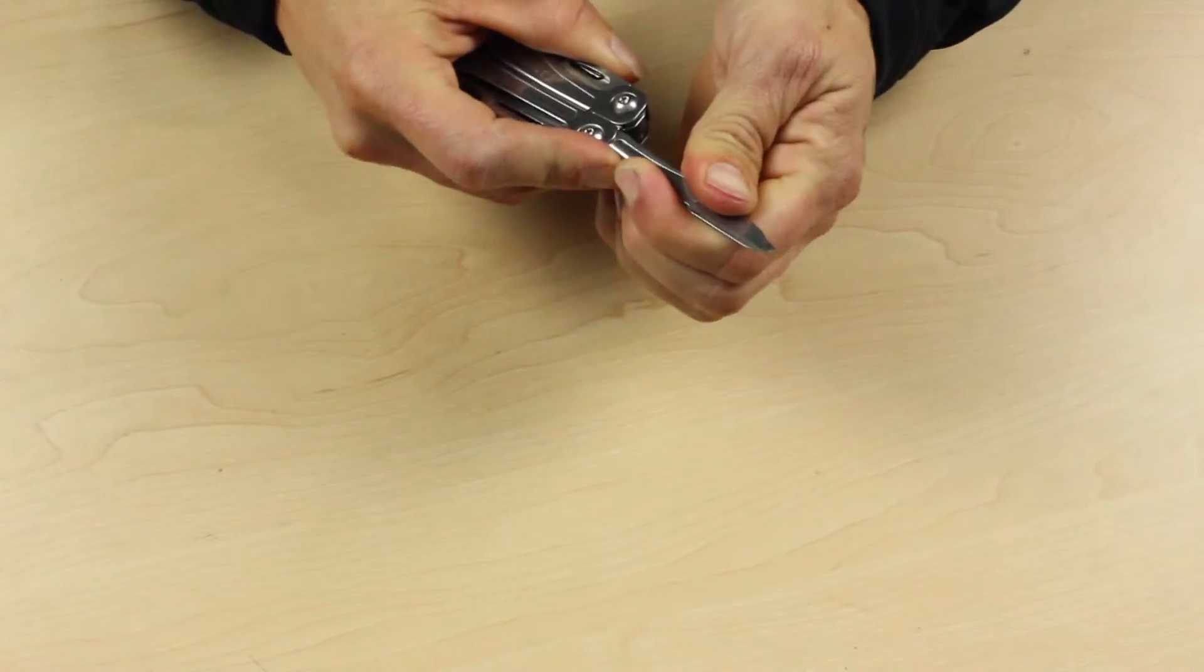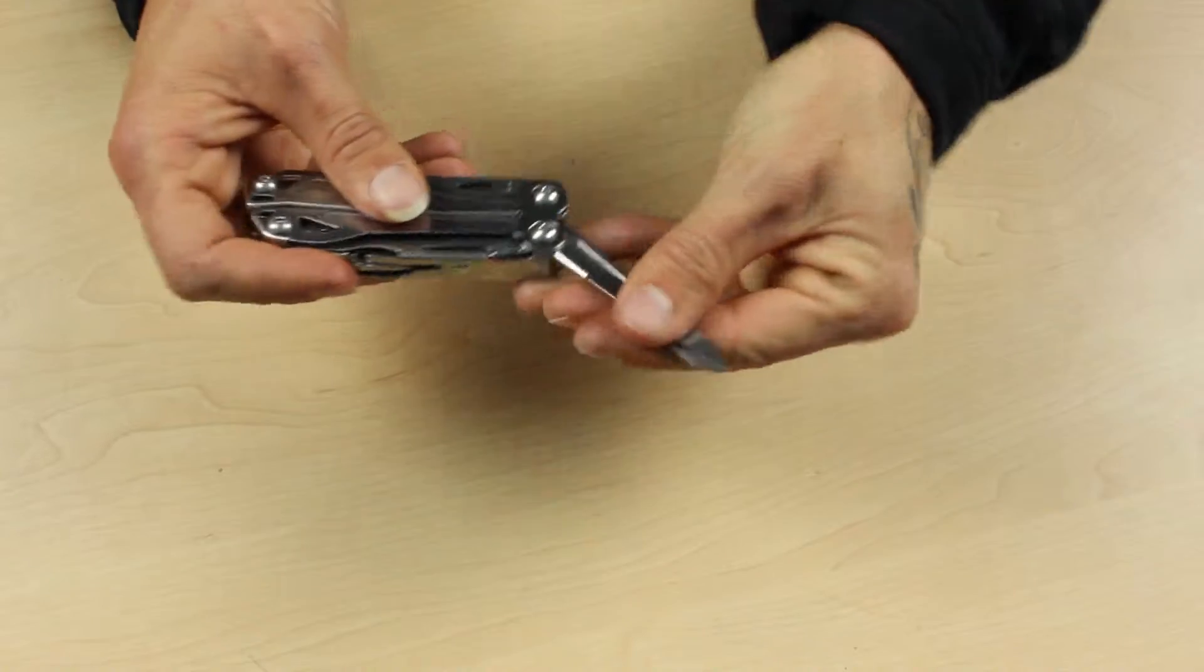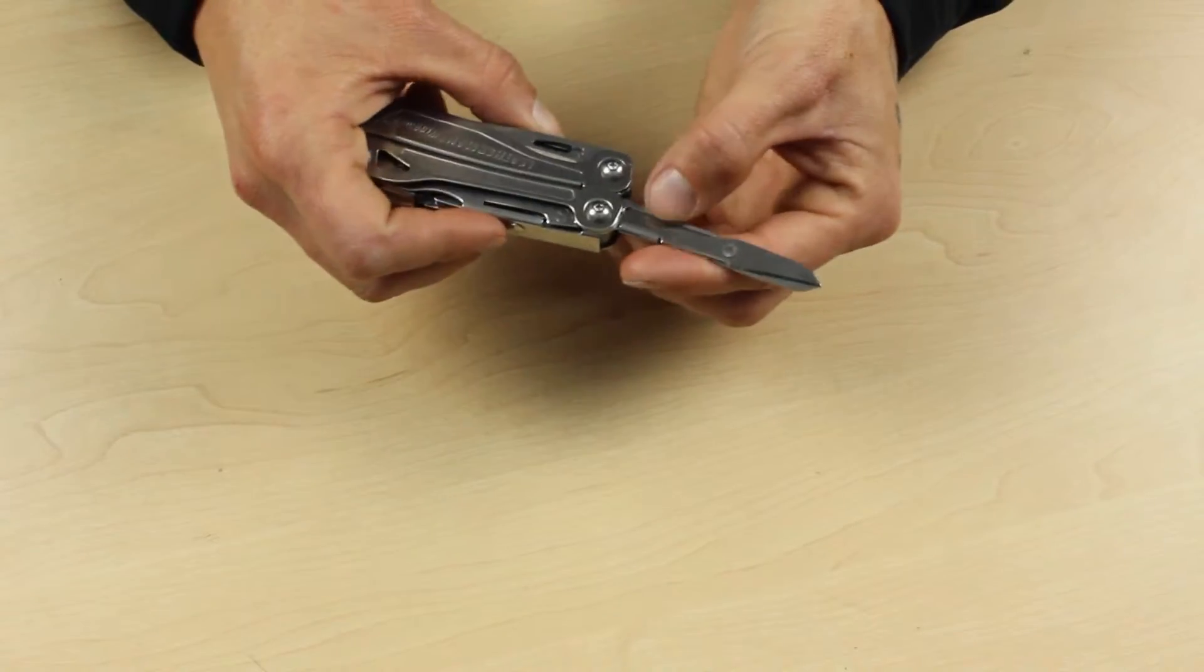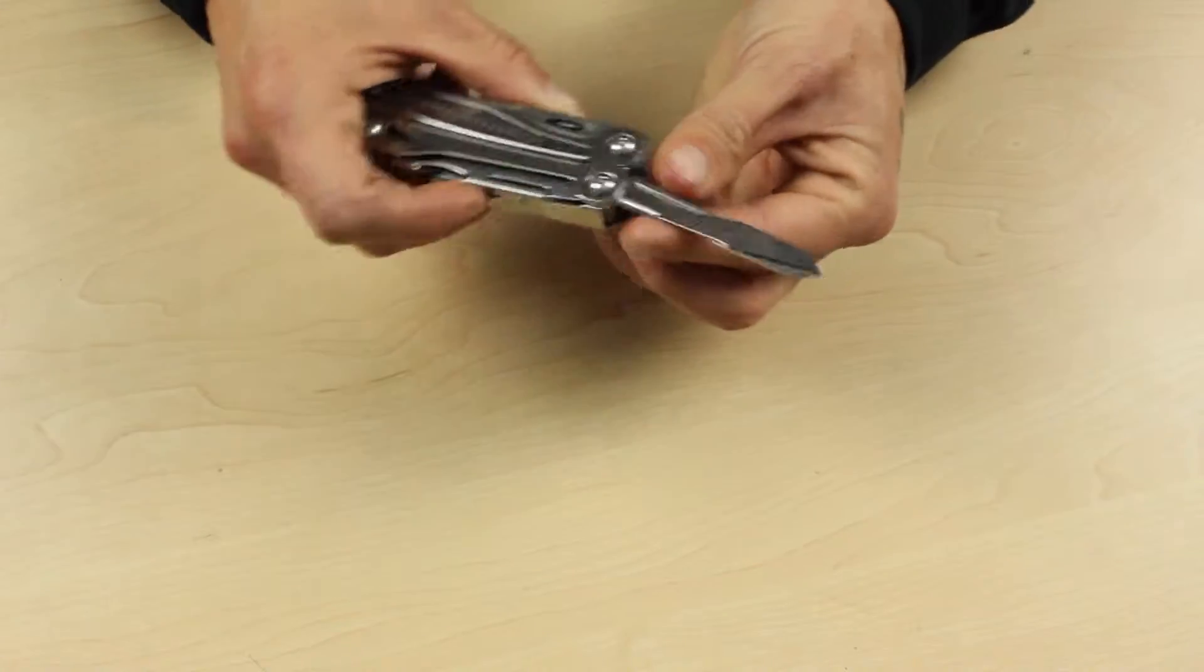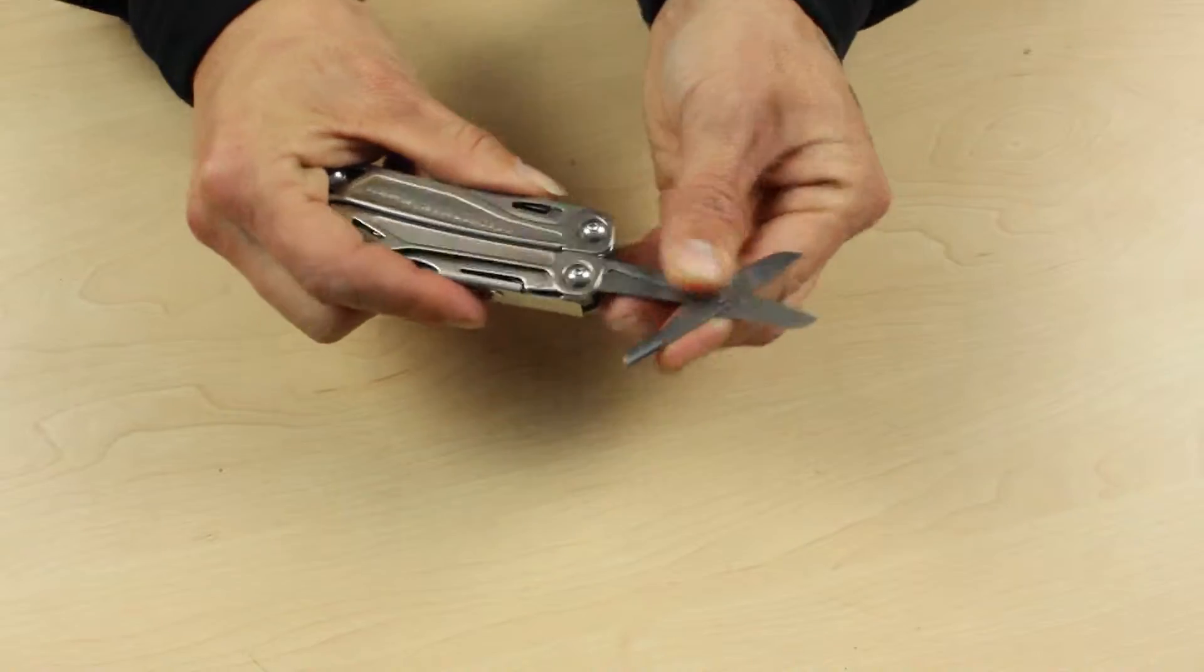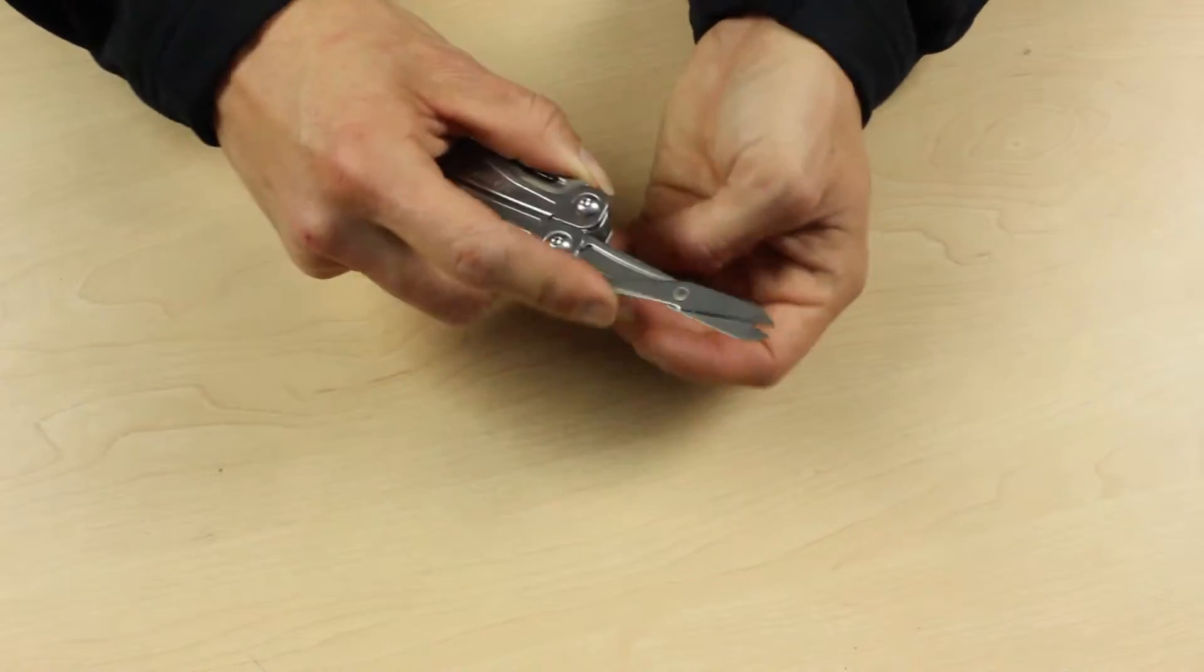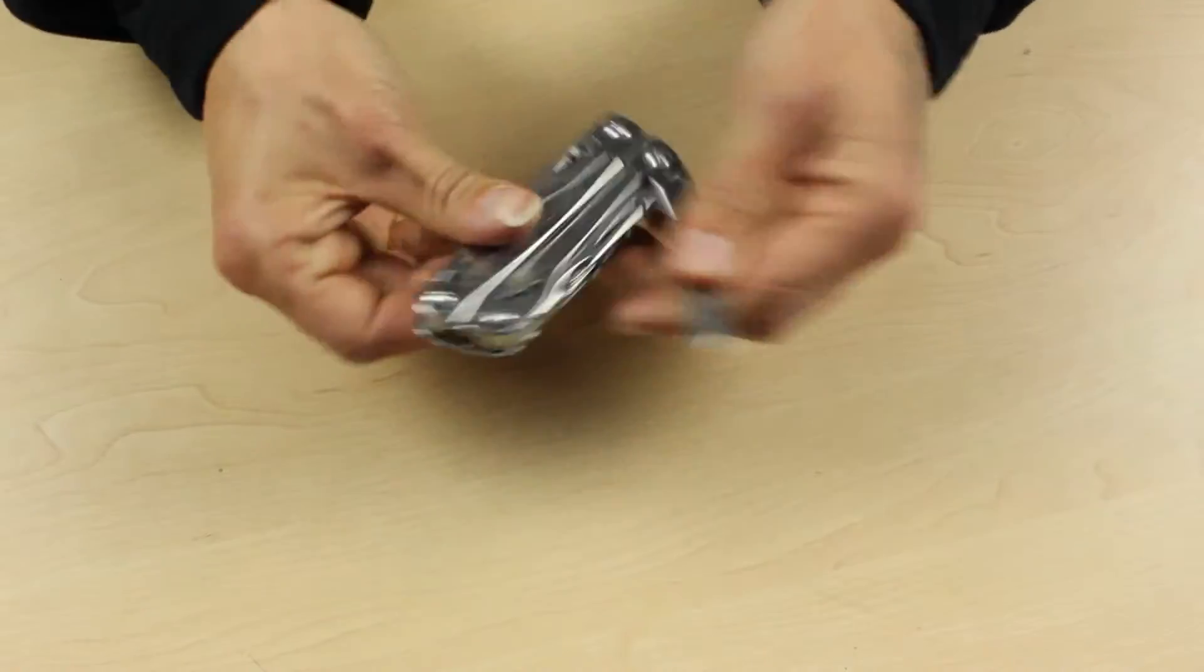On some models it can be a bit sticky to get to the spring action on the scissors. You'll see here the spring action is not taking into effect. If you notice that on your Wingman, just make sure it's locked properly. Once it's locked out properly, those scissors start to work, and they're sprung scissors, so really nice action on that.